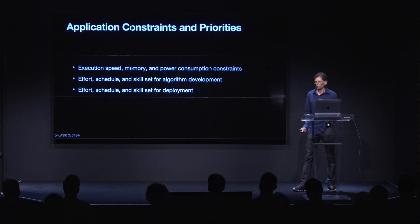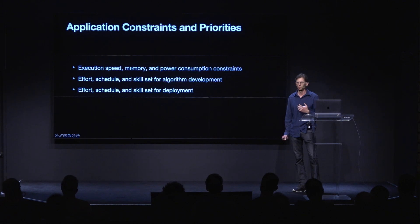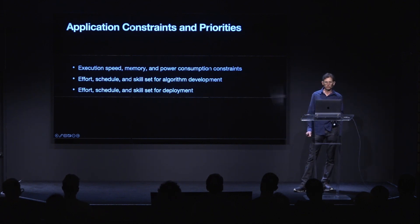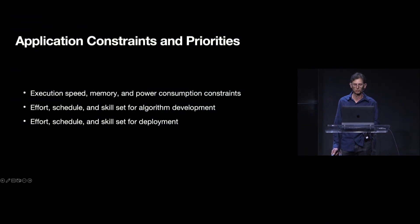Domain knowledge informs what we can do with machine learning or with traditional DSP. Application constraints and priorities are going to inform what's actually practical for us to do. Those constraints might include execution speed, memory use, and power consumption of the deployment platform, but also things like effort, schedule, and skill sets of our team. I'll briefly go through some side-by-side comparisons of machine learning and more traditional human-engineered DSP algorithms.